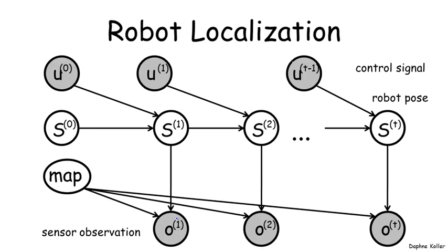Let's look at what the HMM would look like for robot localization. This might not look exactly like an HMM to begin with because it has some additional variables. Here what we have is a state variable that represents the robot pose, that is the position and potentially orientation of the robot within a map at each point in time.